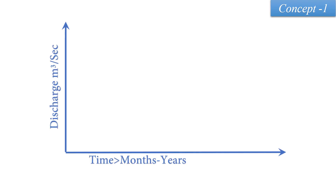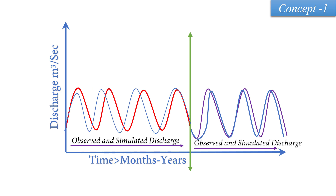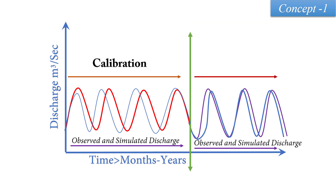In Concept 1, we have a time series and discharge data. We have observed and simulated data divided into calibration and validation periods. First, we run the SWAT model for the calibration period with observed and simulated values. When calibration is finished and we are satisfied, we will see some good metric such as 0.75 or another value.